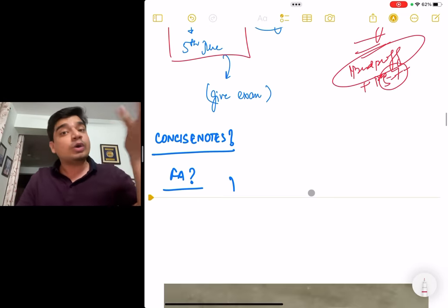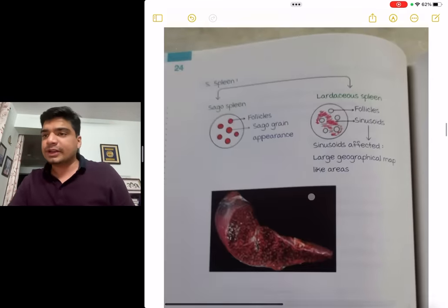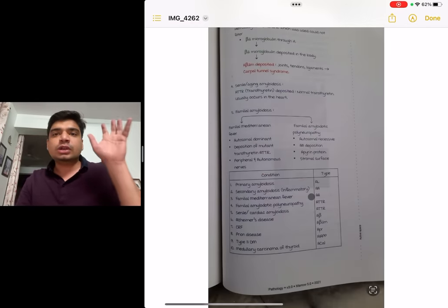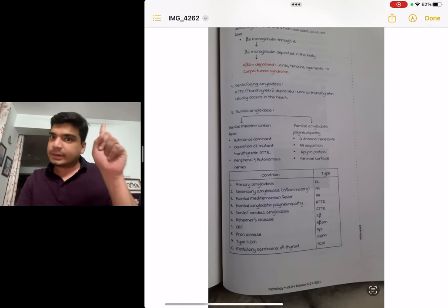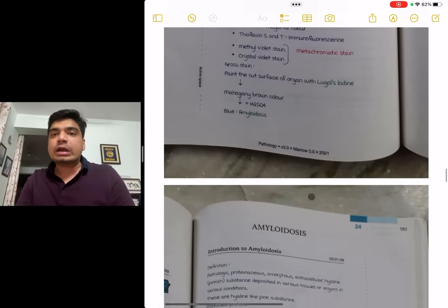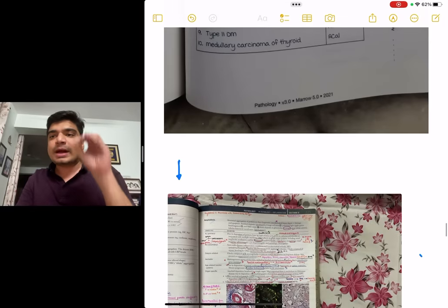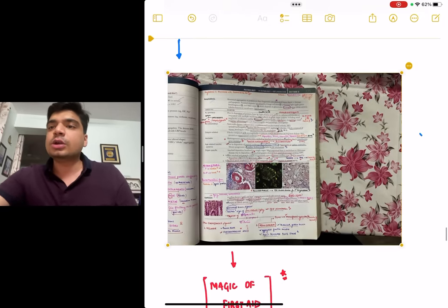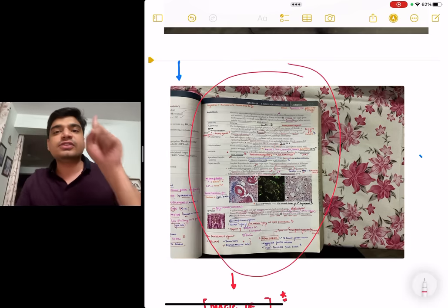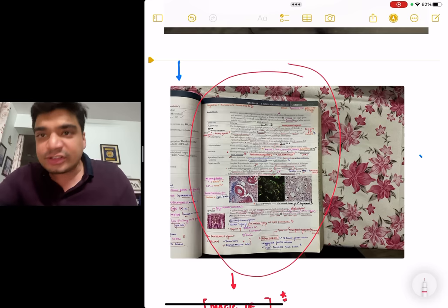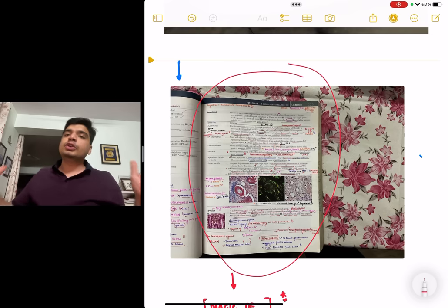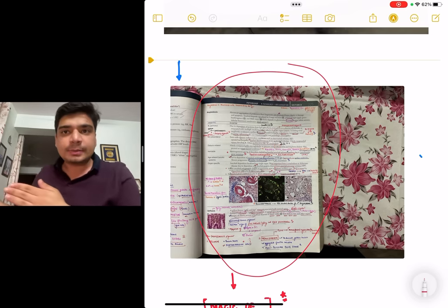Now you will be like, how do we use First Aid? So I will give you an example. For example, these are the Marrow notes. 1, 2, 3, 4, 5, 6. So the entire amyloidosis, it's an important topic, has been covered in 6 pages. And these 6 pages are converted into, let me show you the magic of First Aid. These 6 pages are converted into 1 single page, as far as First Aid is concerned. A single page in First Aid. This is my own First Aid. So basically First Aid has done your hard work. You don't need to concise it. If you would have solved the previous year question.